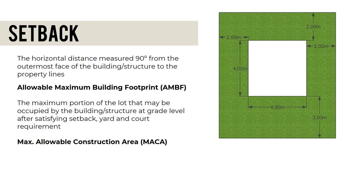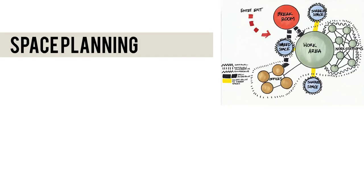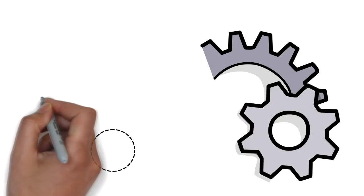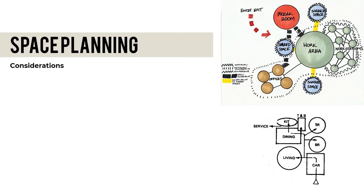The Maximum Allowable Construction Area (MACA) is the combined total of the maximum allowable percentage of site occupancy and the maximum allowable impervious surface area (ISA). Space planning begins with a bubble diagram or schematic sketch. Considerations include the distribution of area, circulation, light and ventilation, and the sizes, areas, and shapes of spaces.